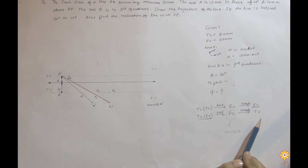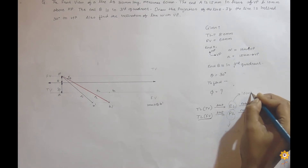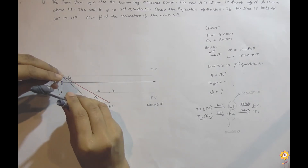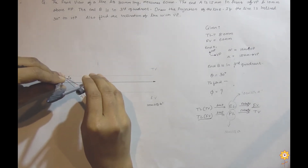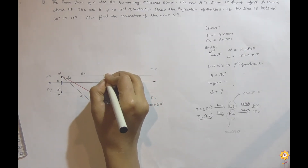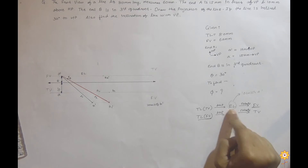Once we have PL, we will rotate it to get the top view — but first we need the locus. We also have the front view, and if we rotate the front view, we get the elevation length (EL) on the locus of A dash. The locus of A dash is the line passing through A dash. So we rotate the front view A dash B dash and get point B2 dash on this locus — and that distance is the elevation length.